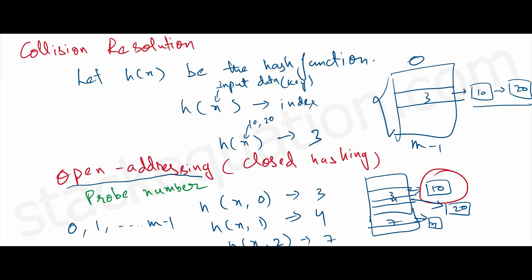Let's say we have a hash function h(x), and we input data to this function and it returns an index. Now let's say for multiple data inputs, for 10 and 20, it returns 3—the same index for two inputs. This will lead to collision.